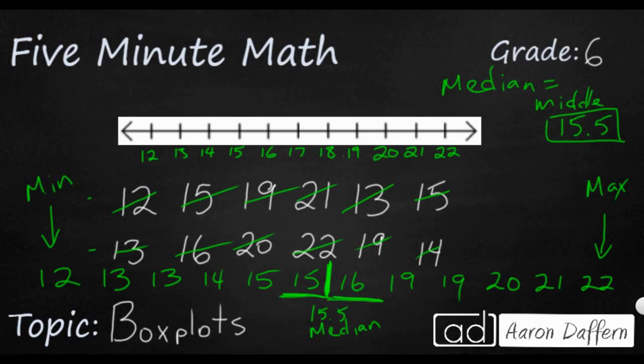So let's look at our bottom half from 12 all the way up to 15. We're going to cut that in half again. This is a number set of six. So once again, this bottom and this second quartile right here is actually going to come right between here, 13.5.